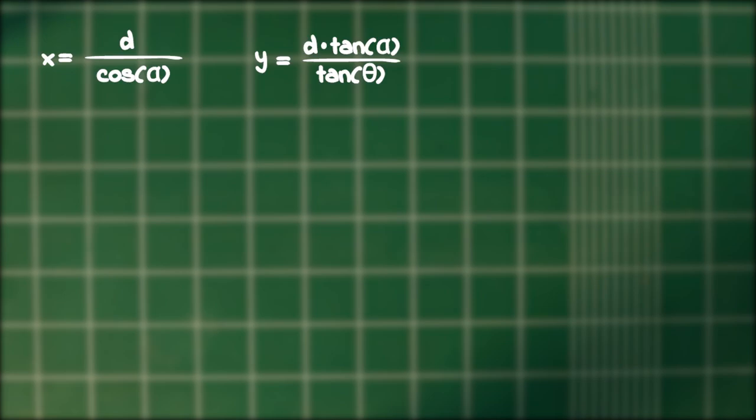Note that d and theta are not parameters, they are constants. In this case, d is 50 millimeters and theta is 60 degrees. So the two expressions we have are a parametric representation of our curve.